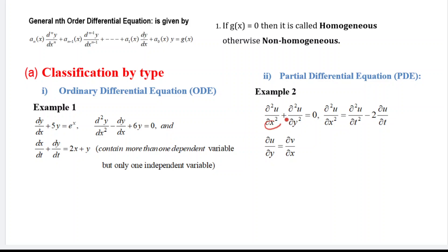In the PDE example, x and y are both independent variables and u is the dependent variable. This is a second-order partial differential equation. In another example, x and t are independent variables and u is the only dependent variable — also a second-order PDE. When y and x are independent variables and u and v are dependent variables, it is a first-order PDE.